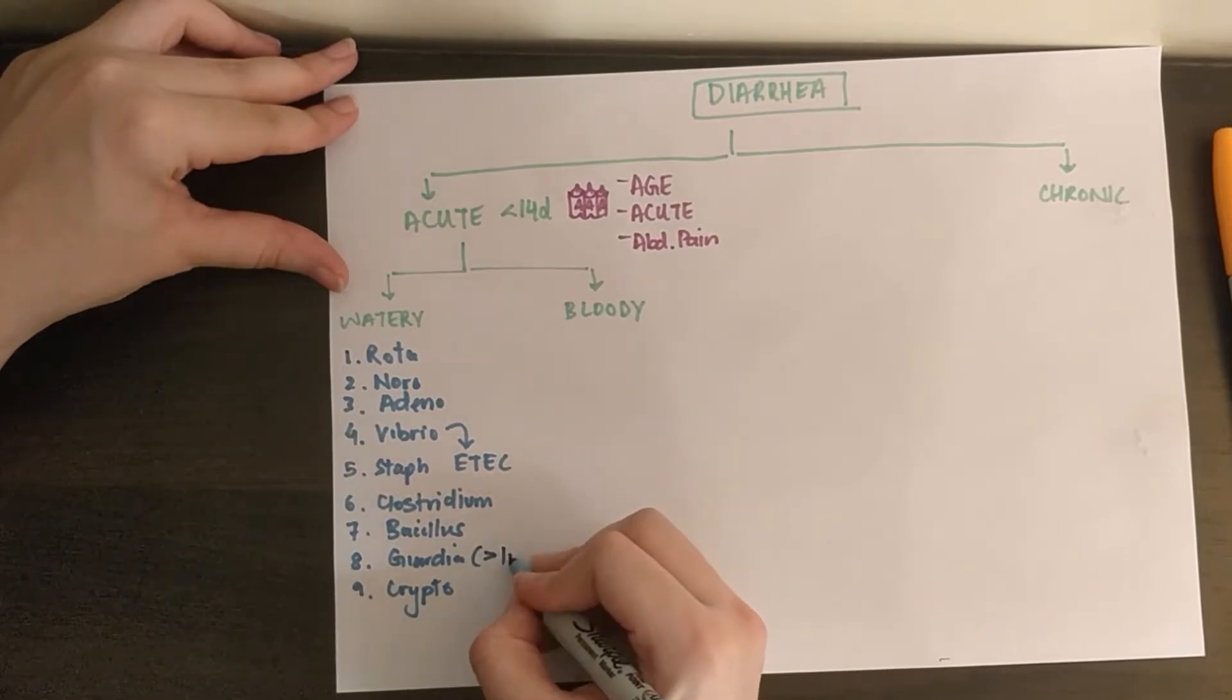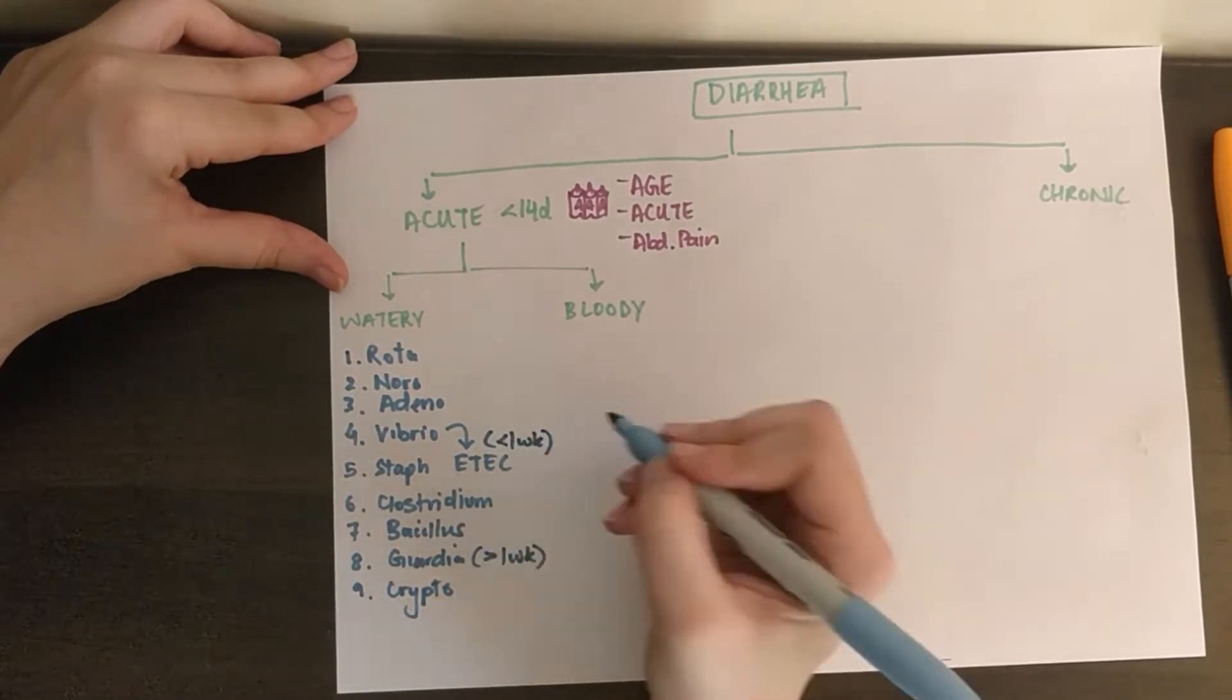Now to differentiate between Giardia and E. coli, Giardia will present after a week, and E. coli within a week.